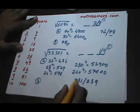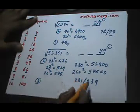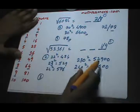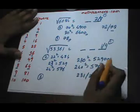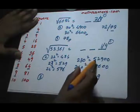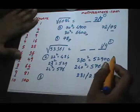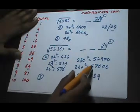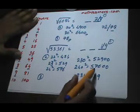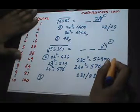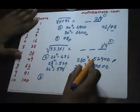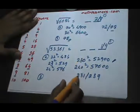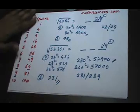Now we need to find which of these two is the square root. We check which number 53361 is closer to. The difference from 52900 is about 400, while the difference from 57600 is about 4000. So 53361 is much closer to 52900, meaning the square root is closer to 230 — therefore the square root is 231.